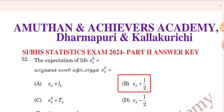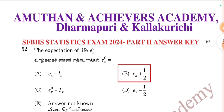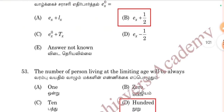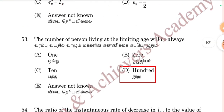Question number 52 is the Expectation of Life. E-x-power-0 equals E-x-plus-1. Also, option B is 53.